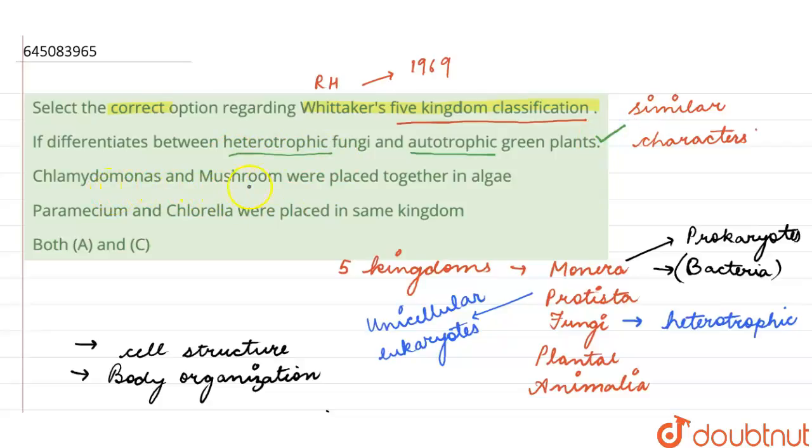The second here is: Chlamydomonas and mushroom were placed together in algae. So this is wrong. Mushroom is a type of fungi.